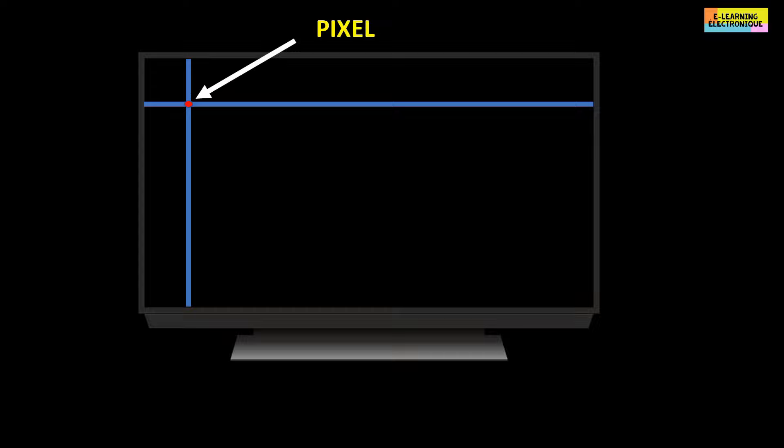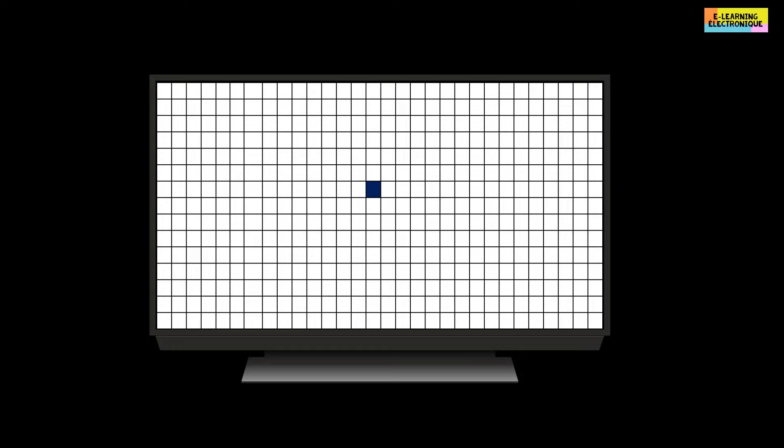The LCD screen is subdivided into a multitude of small squares. Each square is a pixel. The pixels are arranged in a matrix and formed at the intersection of rows and columns. Each pixel displays one color at a time. The number of pixels depends on the display resolution of the screen.